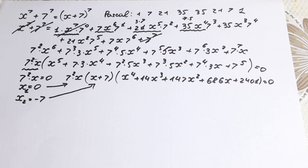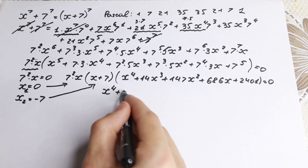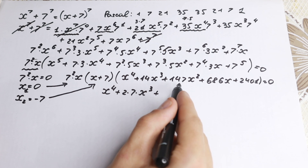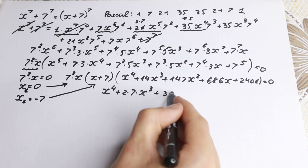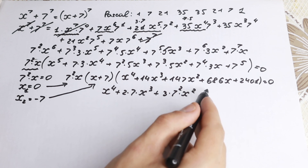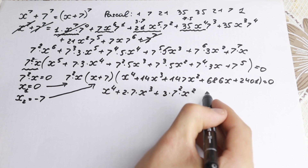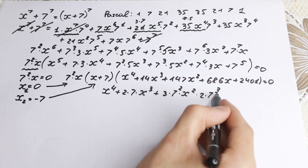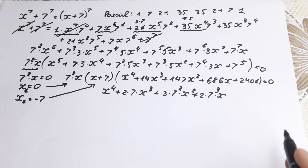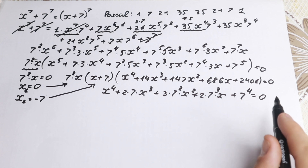Let's solve the quartic x⁴ + 14x³ + 147x² + 686x + 2401 = 0. We rewrite the coefficients: 14 = 2·7, 147 = 3·7², 686 = 2·7³, and 2401 = 7⁴. So the equation becomes x⁴ + 2·7·x³ + 3·7²·x² + 2·7³·x + 7⁴ = 0. Now we divide both sides by 3·7²·x² to proceed.